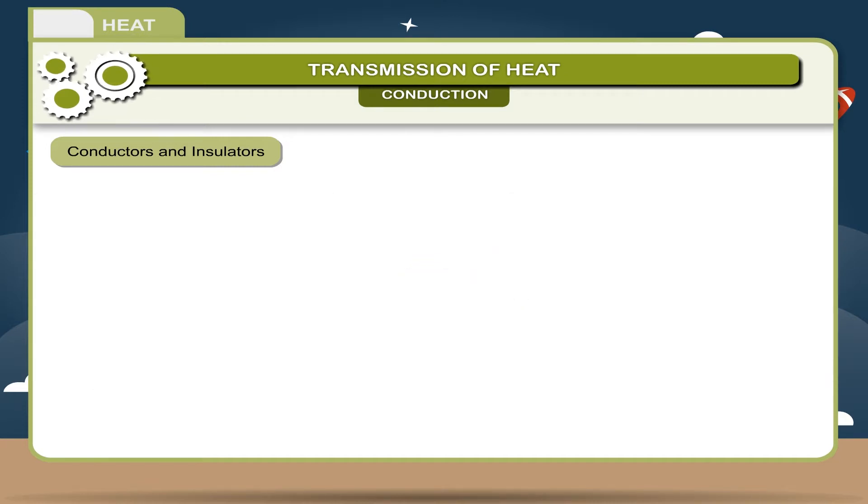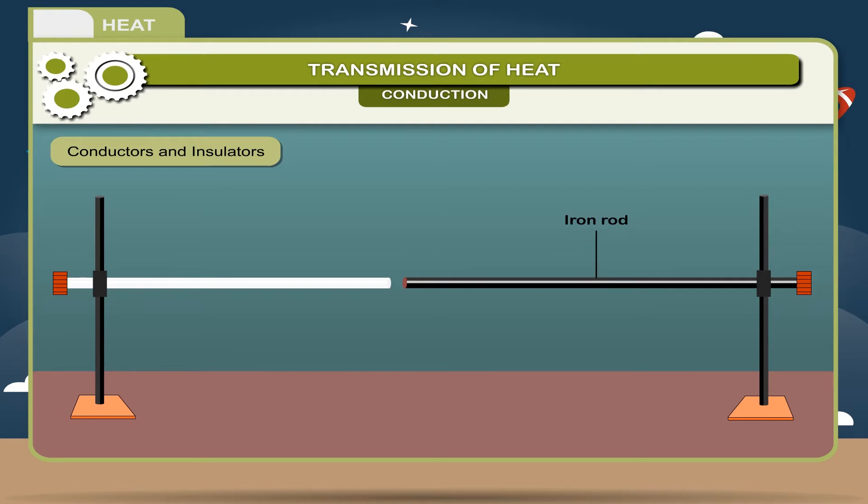Activity: Take two rods, one of iron and the other of glass. Put small nails at each rod with the help of the wax on these rods. The other end of these rods are exposed to flame of a burner. You will notice that nails in iron rod will fall due to melting of wax while in the glass rod, the nails do not fall.